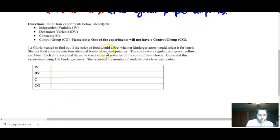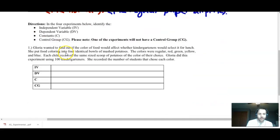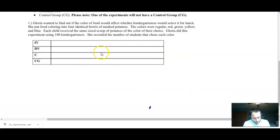Reading through this, Gloria wants to find out if the color of food would affect whether kindergartners would select it for lunch. So she puts food coloring in four identical bowls of mashed potatoes. They have regular potatoes, red, green, yellow, and blue. Each child received the same size scoop of potatoes of their color choice. Gloria did this using 100 kindergartners. She recorded the number of students that chose each. What I would always encourage you to do with these videos, you should pause right now, try and answer all four of these on your own, and then hit play and see how you did. Independent variable, what is it that the researcher is changing? In this case, she is changing color of potatoes.